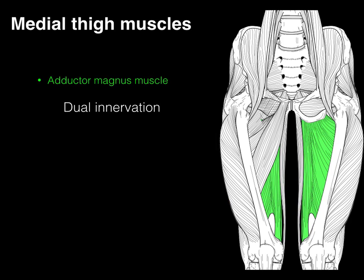The adductor magnus is also interesting because, like the biceps femoris, it has dual innervation. That black line represents the distinction: the part of the adductor magnus that attaches to the linea aspera is innervated by the obturator nerve, while the part that arises from the pubis and goes down to the adductor tubercle is innervated by the tibial nerve. That division is sometimes called the hamstring division of the adductor magnus, because it's innervated by the tibial nerve, much like the hamstrings.